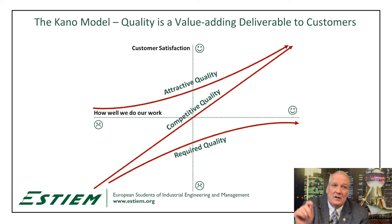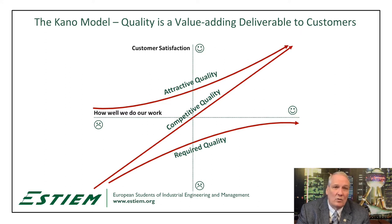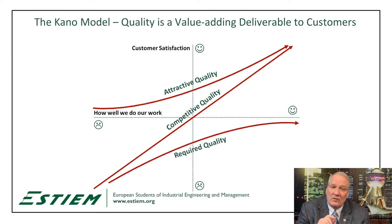The next level is competitive quality. Competitive quality is about the comparison between different components or requirements of a product. For example, we might look at a car's capability to travel a vast distance on fuel — gas mileage — considered as a function of cost or value.